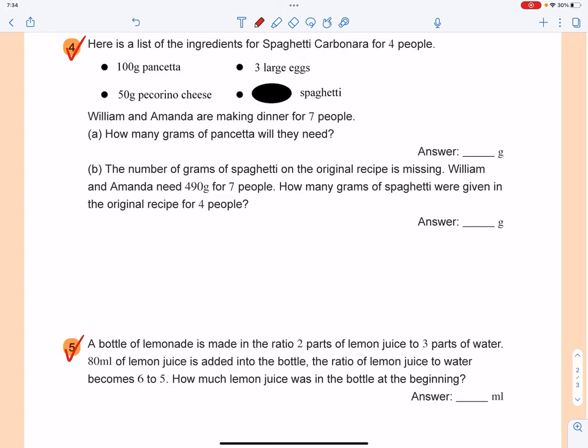William and Amanda are making dinner for seven people. How many grams of pancetta will they need? So you will see that for four people, you need 100 grams of pancetta. And that means for each one, you need to have 100 divided by four, which is 25 grams.